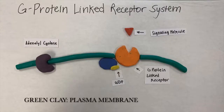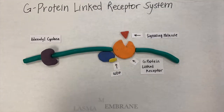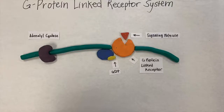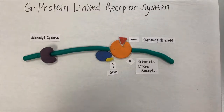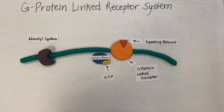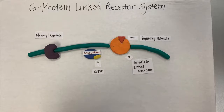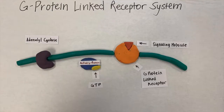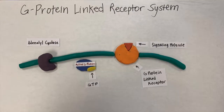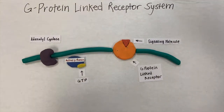First, the signal molecule binds the G protein-linked receptor. Then the GDP molecule transforms to GTP. When the GTP molecule combines with the inactive G protein, it becomes active.